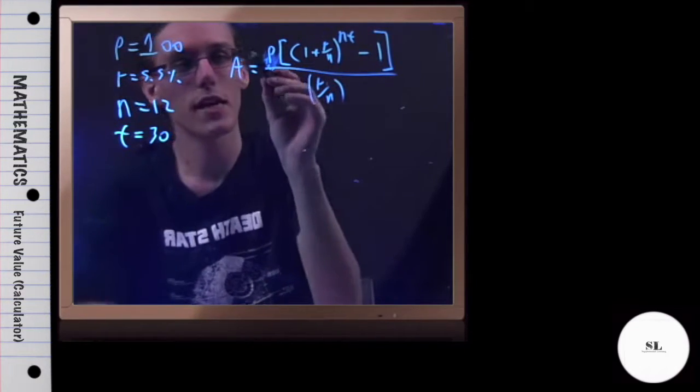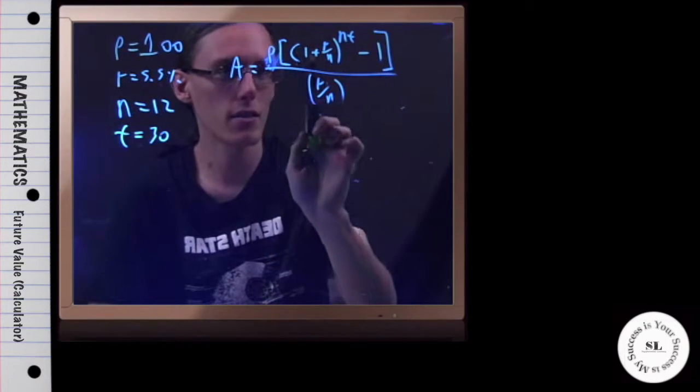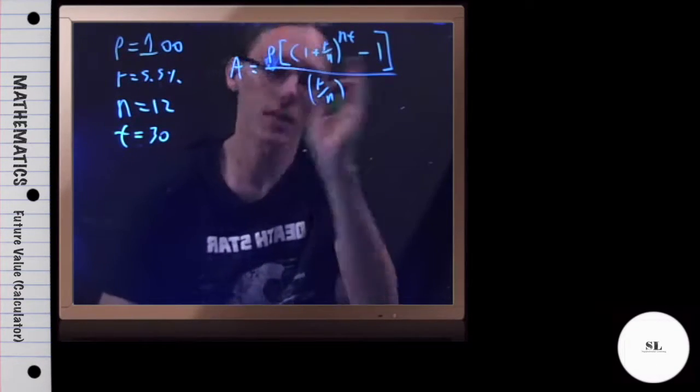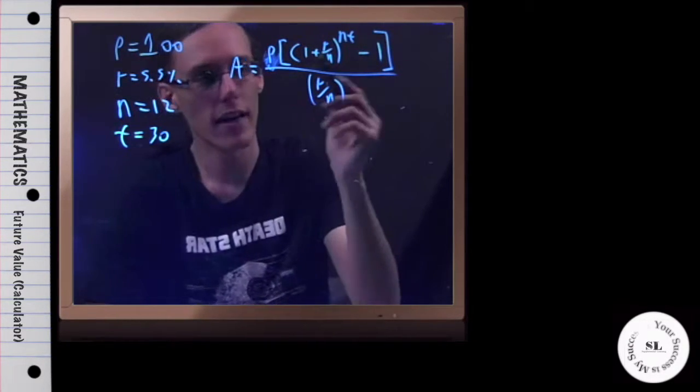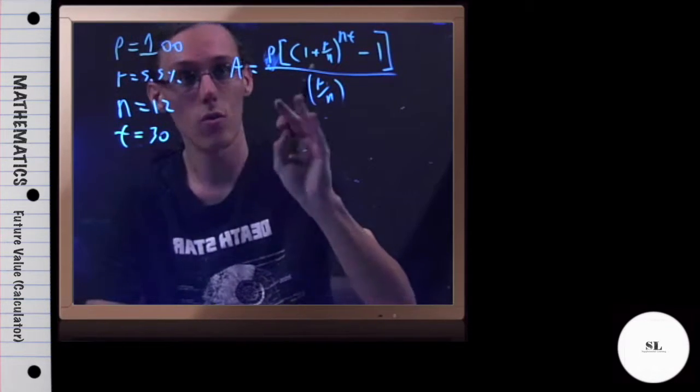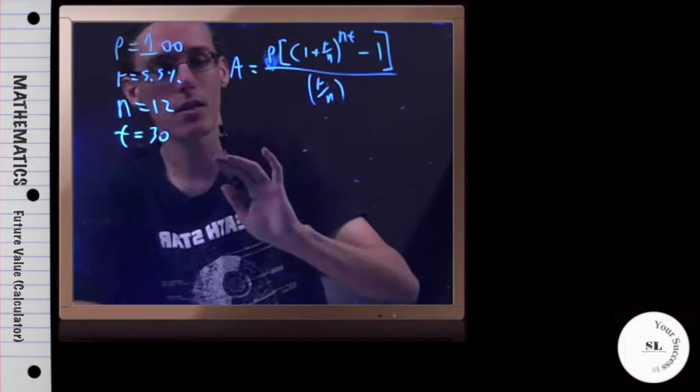But all it's saying is that you take the payment you're making each time, multiply it by this stuff in here, which is the rate over the number of compounds raised to the number of compounds times time, minus 1, and then divide that by the rate divided by the number of compounds. So we have all of that right here. So all we have to do is plug this in and solve.